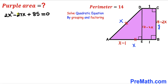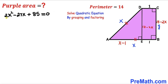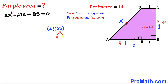We have the quadratic equation 2X² minus 27X plus 85 equals 0, which we'll solve by grouping. Multiplying 2 times 85 gives 170. We can write 170 as 10 times 17, and notice that 10 plus 17 equals 27, matching the middle coefficient. So we split the middle term as negative 10X minus 17X.